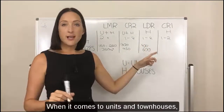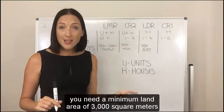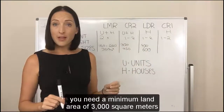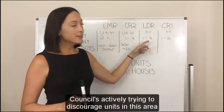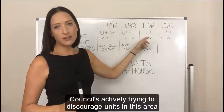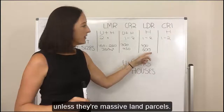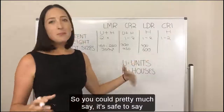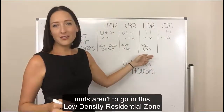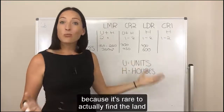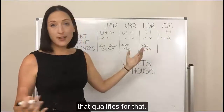When it comes to units and townhouses in LDR, you need a minimum land area of 3000 square metres. Council is actively trying to discourage units in this area unless they're massive land parcels. So it's safe to say units aren't going in this low density residential zone, because it's rare to actually find land that qualifies.